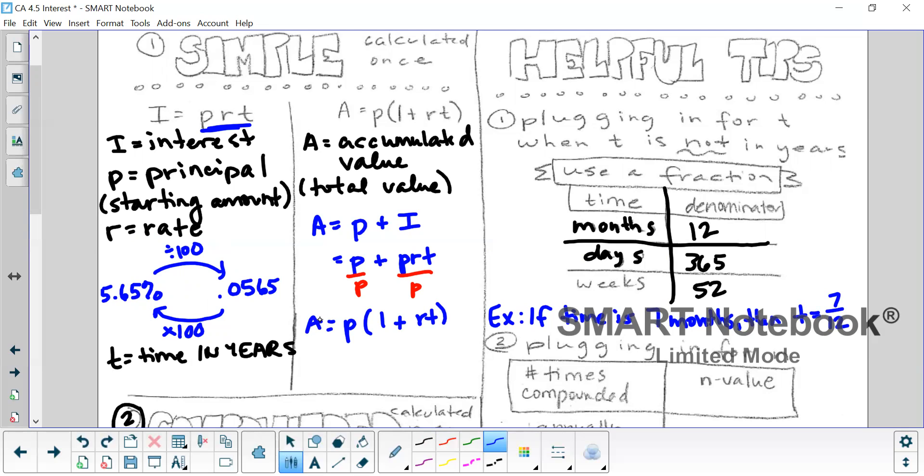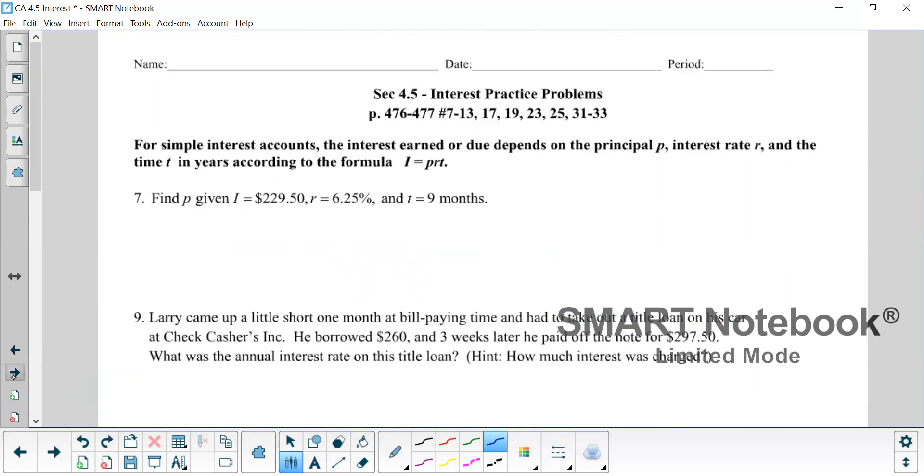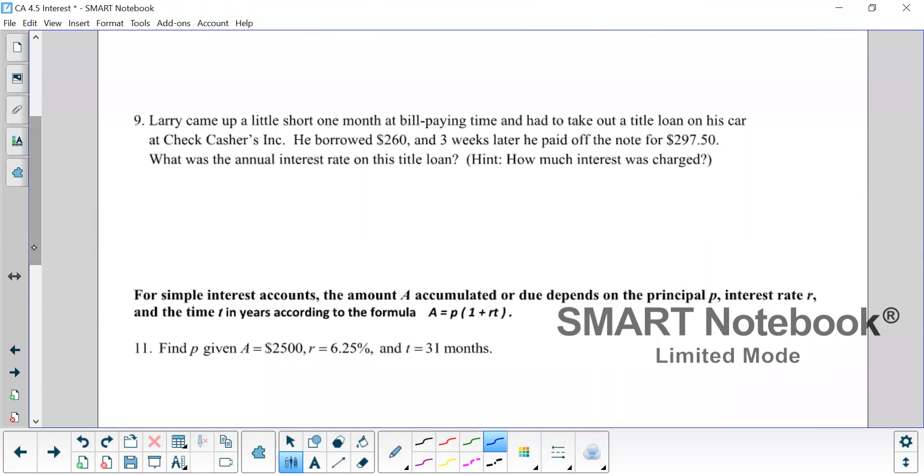And now before we talk about the other kinds of interest, we're going to go to the homework practice sheet and do two problems with simple interest while it's fresh in our mind. So we're going over here. This is your practice problems. And we're going to look at number nine. What I want you to do right now is pause your video, go through this word problem, and anytime you're given a piece of information, I want you to decide which variable that is and label it with that variable. So it's either A, I, P, R, or T. Pause the video now, spend some time with it, and then come back when you're ready.